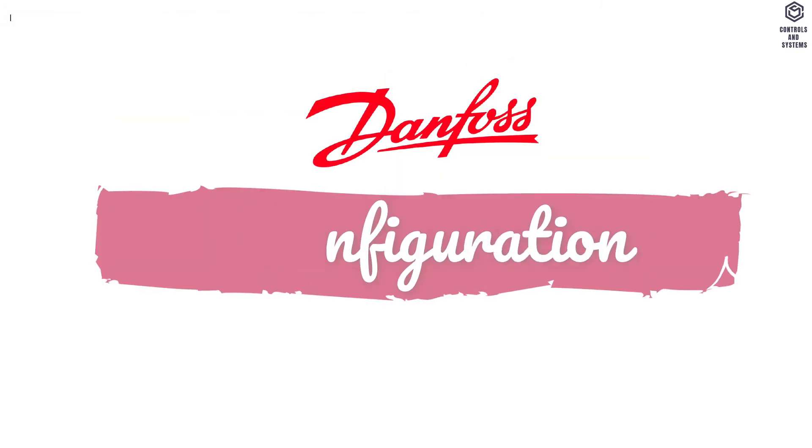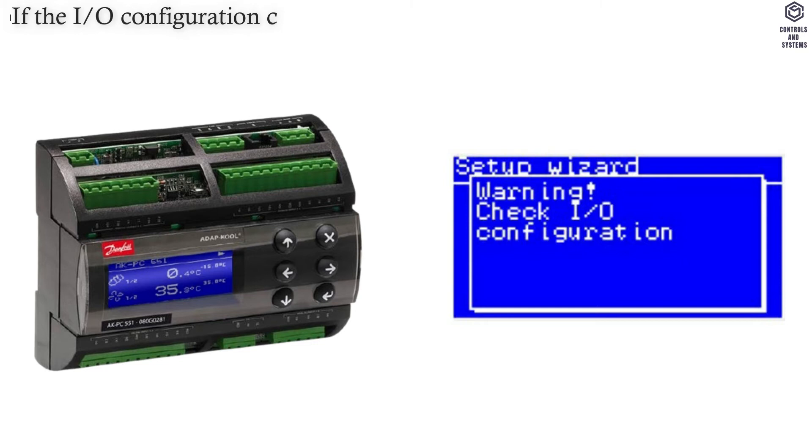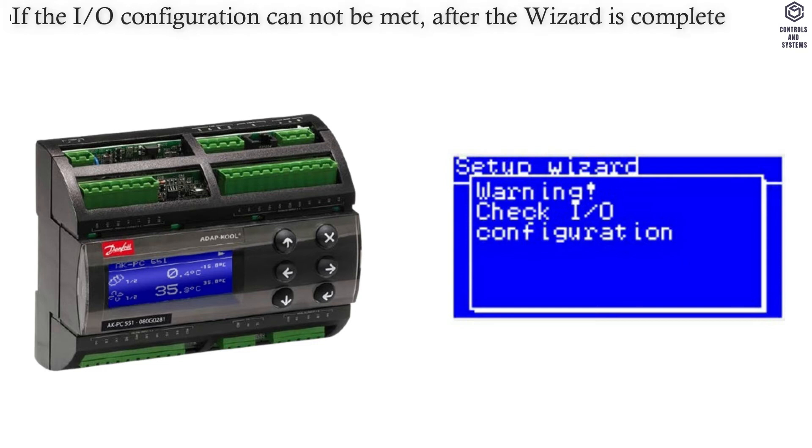Password — EKE400 controller password levels and user rights are shown below. Configuration: if the I/O configuration cannot be met after the wizard is completed, a warning will be displayed.